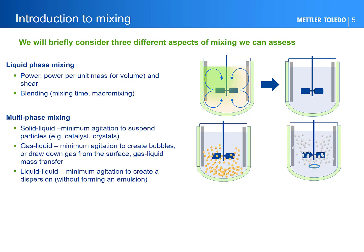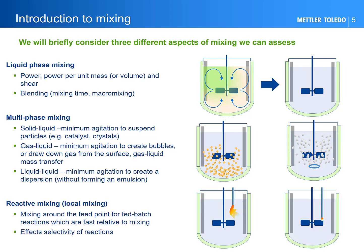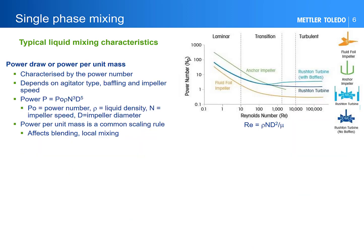In a multi-phase system we need to think about a minimum level of agitation to keep the phase dispersed in the liquid and also mass transfer between the phases. In cases where you have a fed-batch reaction and the reactions are fast relative to mixing, the local mixing around the feed point can be very important. For single phase mixing, one very common indicator of the intensity of mixing is the power per unit mass. This comes from the power draw, which may be calculated from the edge data torque, and is characterized by a power number for an impeller, which can be used to assess the effects of impeller speed and scale on power.